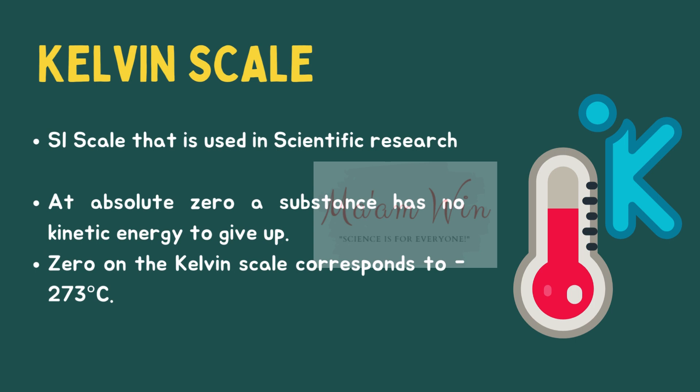Scientific research uses the SI scale, the Kelvin scale. Degrees are the same size as Celsius degrees and are called kelvins. On the Kelvin scale, the number zero is assigned to the lowest possible temperature, the absolute zero. At absolute zero, a substance has no kinetic energy to give up. Zero on the Kelvin scale corresponds to negative 273 degrees Celsius.